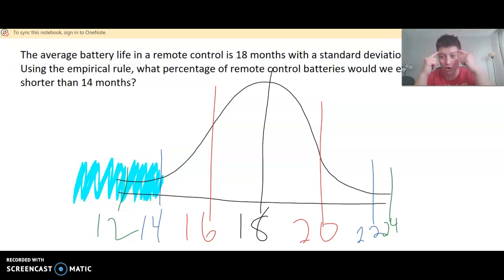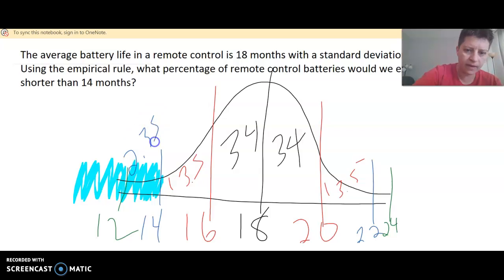Now, if you've got the percentages in your head, that's great. They're better if they're on paper. So, we know that these are 34, 13.5, 2.35, and the tail is 0.15.